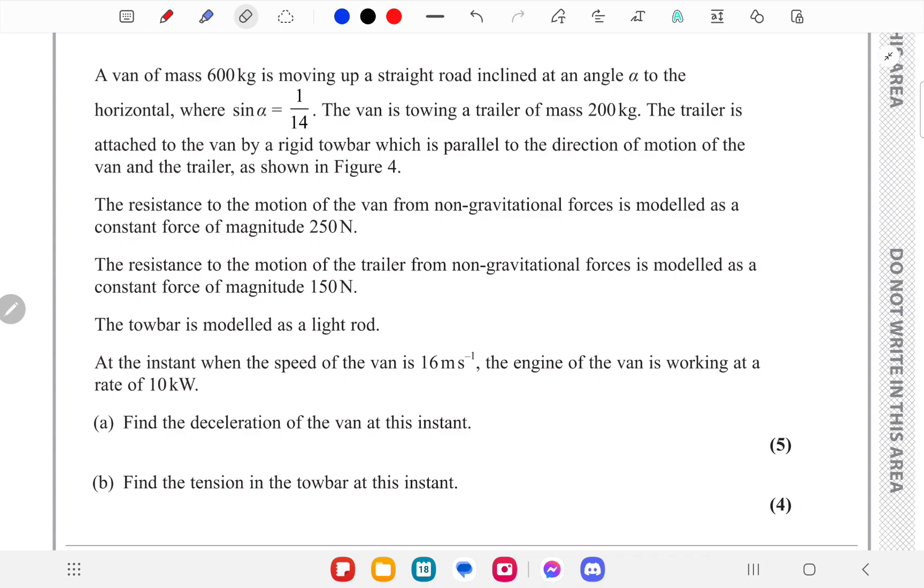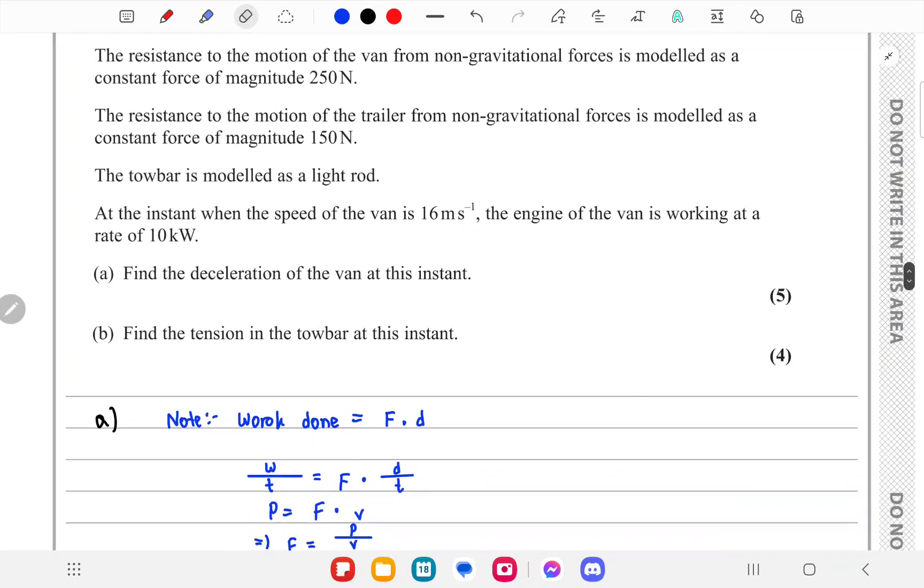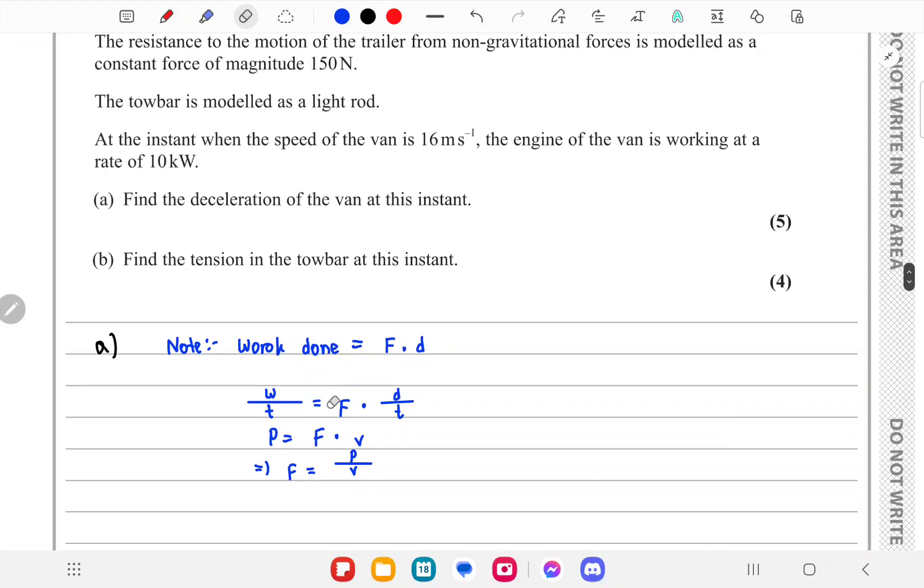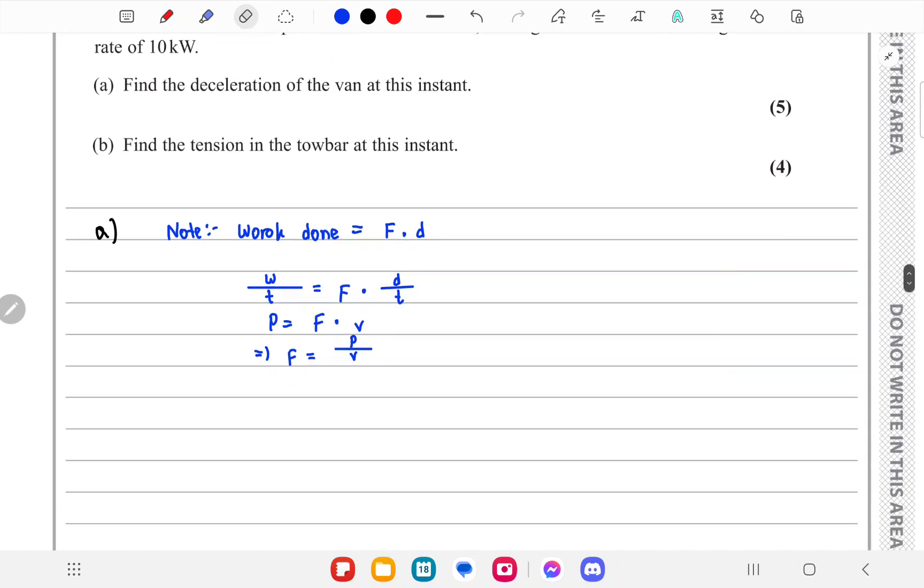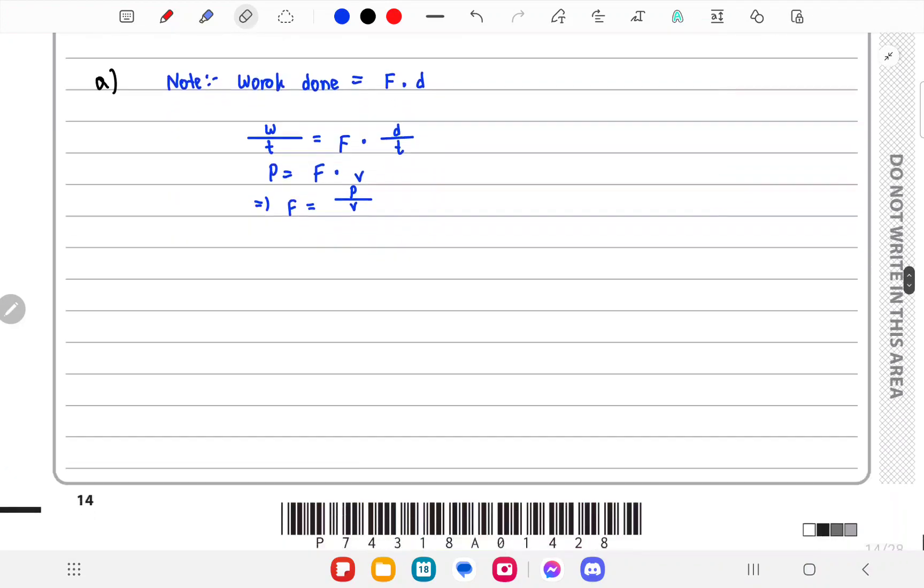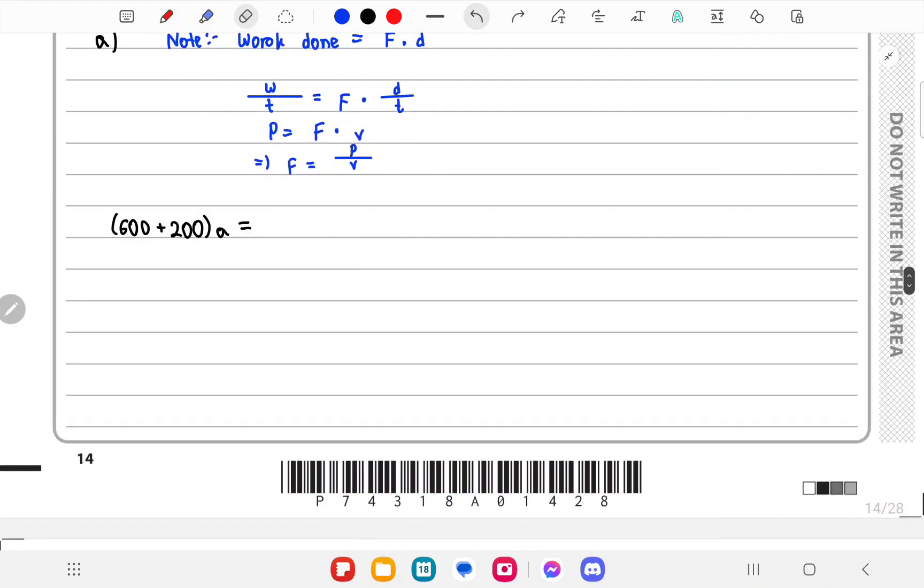If you don't know this formula, you need to note: the work done is force times distance, so the power will be force times velocity. Therefore, force equals power divided by velocity.